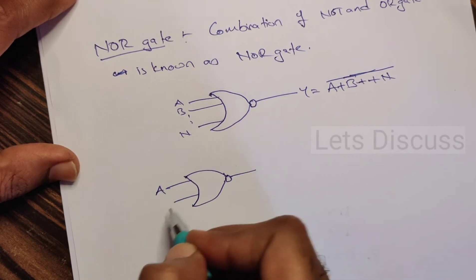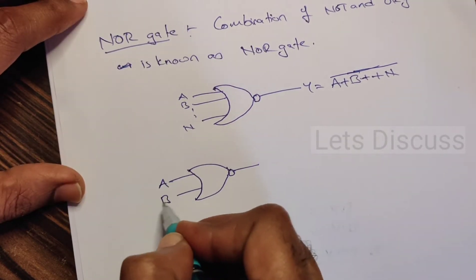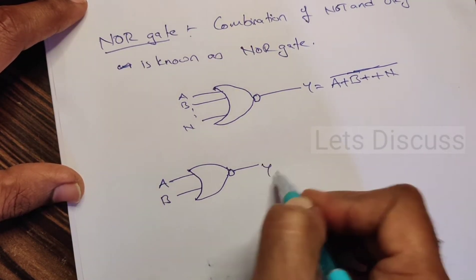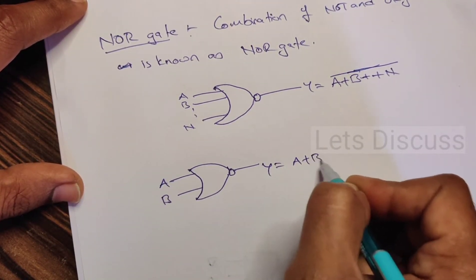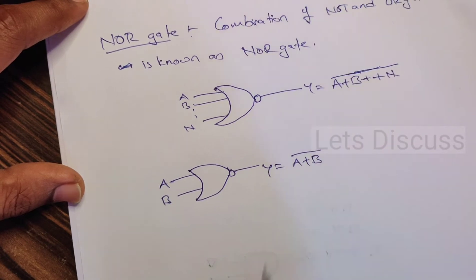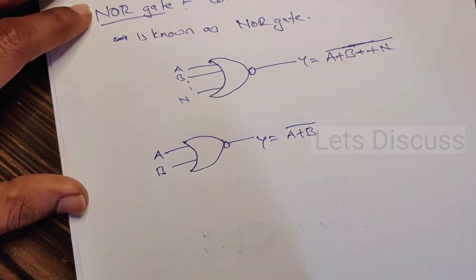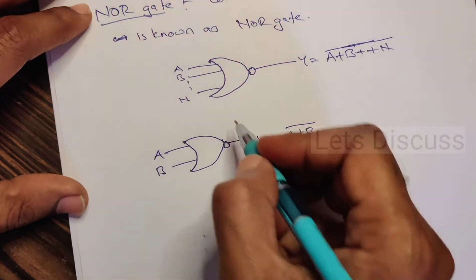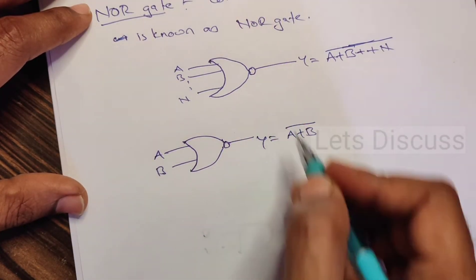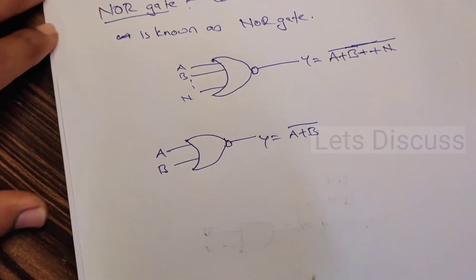Now let's take a two-input NOR gate with inputs A and B. The output is Y = (A + B) bar. This is the logical symbol of the NOR gate.